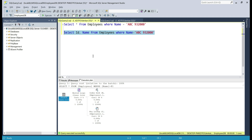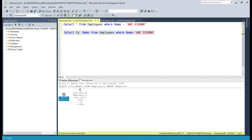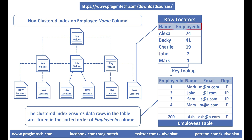Take a look at this query. In the select list, we are requesting ID and name columns. Let's execute it. Notice now in the execution plan we only have index seek — we don't have key lookup. This is because both ID and name columns requested in the select list are available in the index. Basically, the database engine has everything it needs in the index itself, so there's no need to look up the data row in the employees table. This is the reason we don't see key lookup in the execution plan.